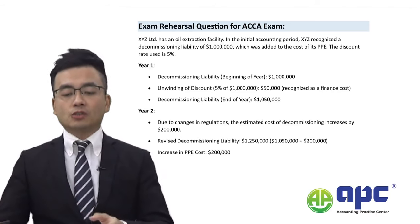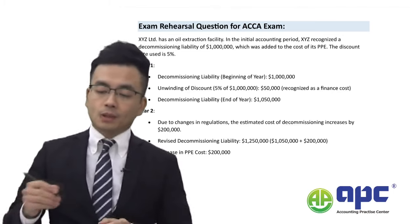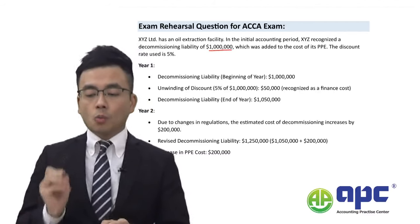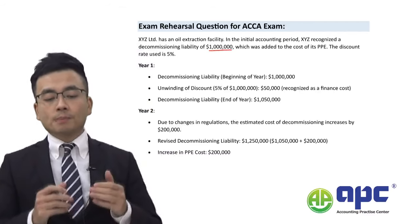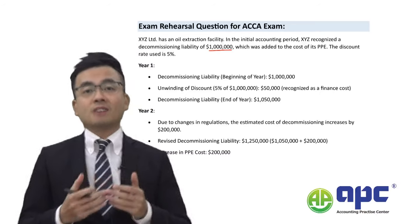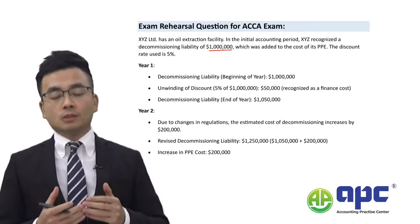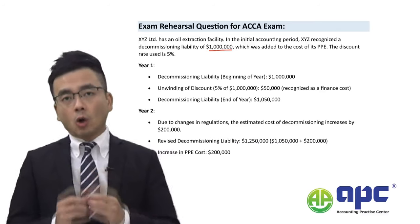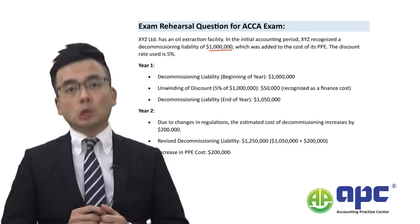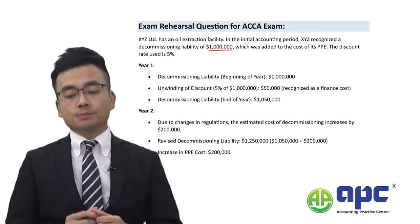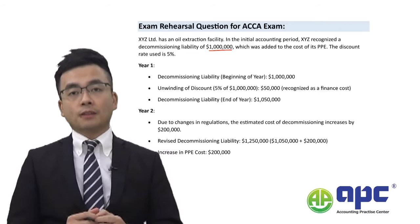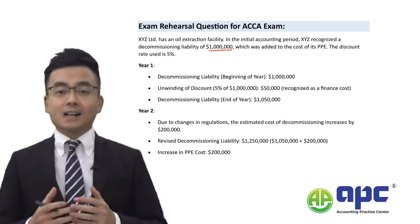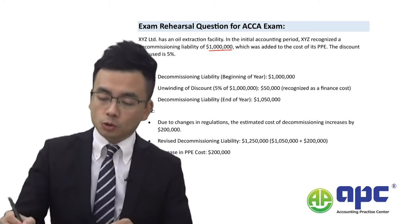XYZ is an oil extraction facility company that, at the start, has already recognised a liability of $1 million, because XYZ Limited will have to decommission — meaning get rid of its facility — in later years. According to environmental laws and regulations, it will have to recognise that decommissioning liability, and it has added the $1 million to the cost of PP&E.